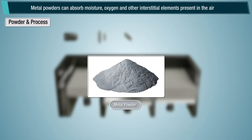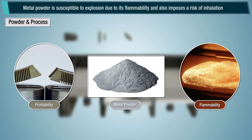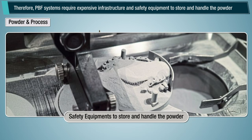Metal powders can absorb moisture, oxygen, and other interstitial elements present in the air, affecting printability and the final material properties of the part. Metal powder is also susceptible to explosion due to its flammability, and imposes a risk of inhalation. Therefore, powder bed fusion systems require expensive infrastructure and safety equipment to store and handle the powder.